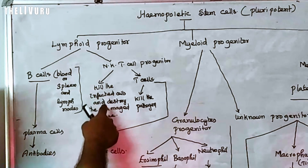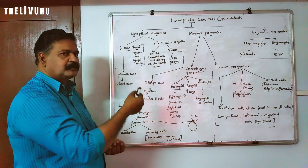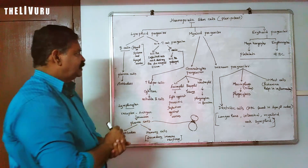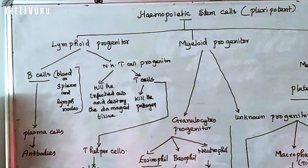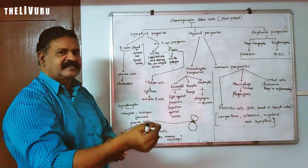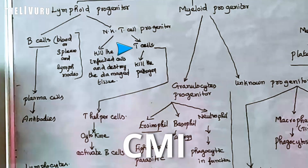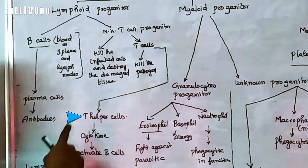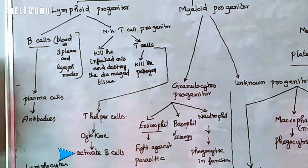NK cells directly kill infected cells and destroy damaged tissue. The NK and T-cell progenitors give rise to T cells. T-helper cells are a type of T cell that produce cytokines which activate B cells.